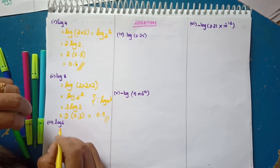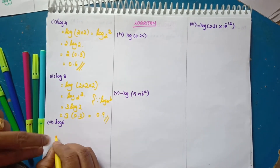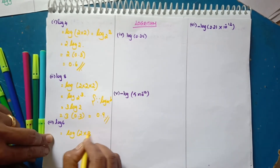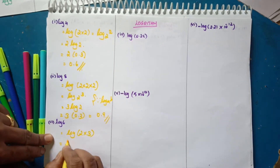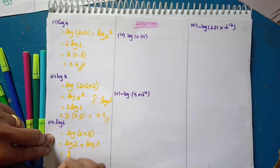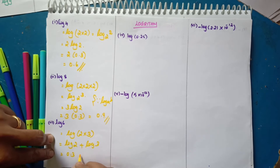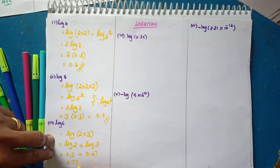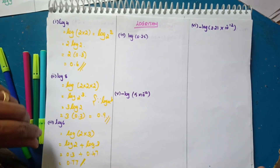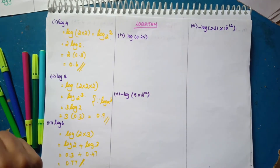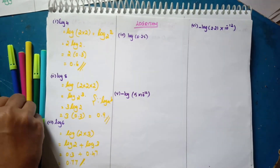Next, log 6. We write log 2 plus log 3. Log 2 value is 0.3 and log 3 value is 0.47. Total value is 0.77. So this is the answer — you can add this to get the value.